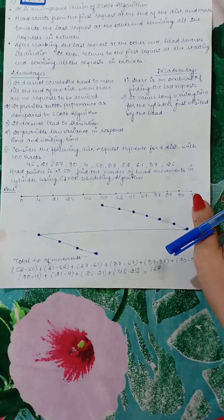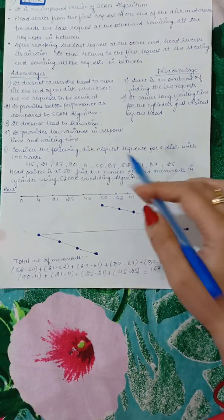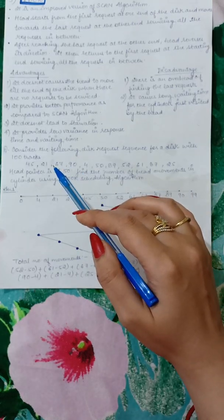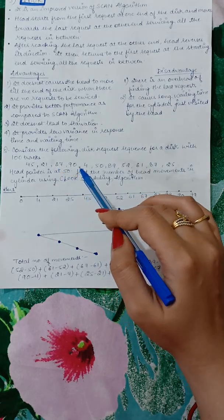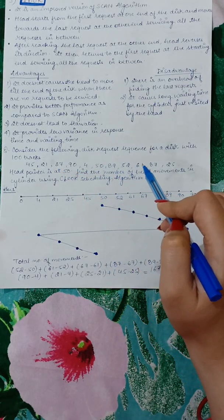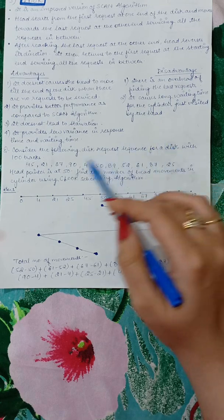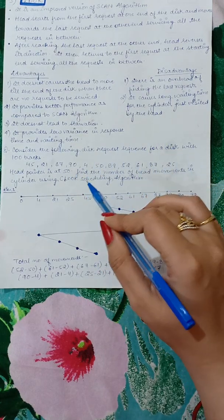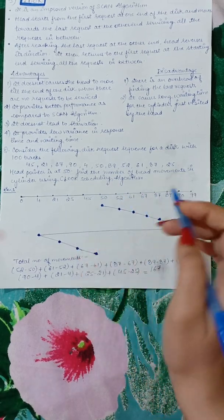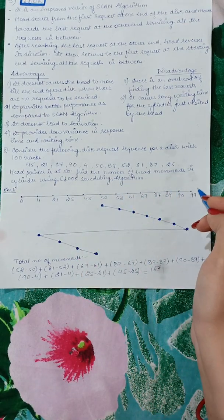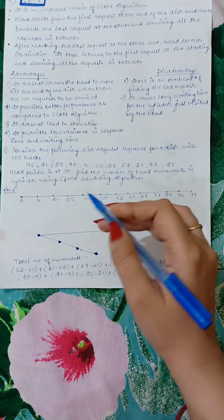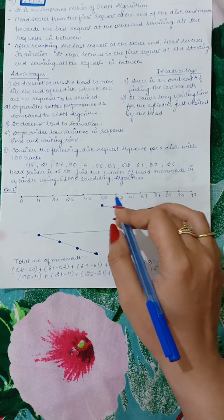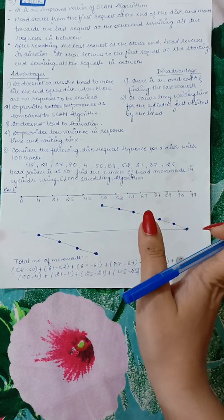Consider the following disk request sequence for a disk with 100 tracks. The request order is 45, 21, 67, 94, 50, 89, 52, 61, 87, and 25. The head pointer is at 50. Find the number of head movements in cylinders using C-LOOK scheduling algorithm. So 0 to 99, I have labeled the tracks. These are the requests in the given order. The head pointer is at 50 and we move towards larger cylinder numbers, so we will be moving towards the right.